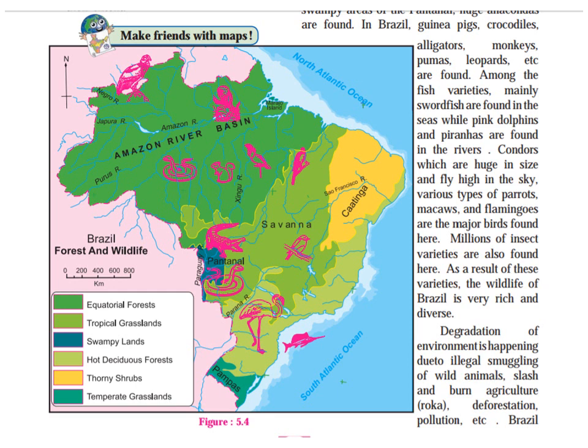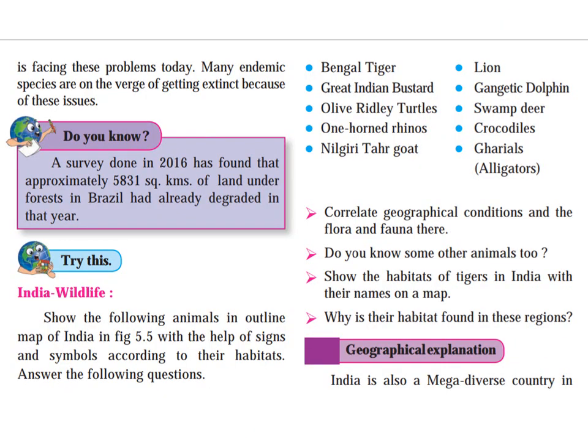Degradation of environment is happening due to illegal smuggling, meaning they are illegally capturing animals and selling them in the international market or killing them. These activities are done in India and also in Brazil. Slash and burn agriculture, known as roca in Brazil, involves tribal people selecting land, cutting down trees and burning the roots. Because of this, lots of plants and animals' habitats have been destroyed.